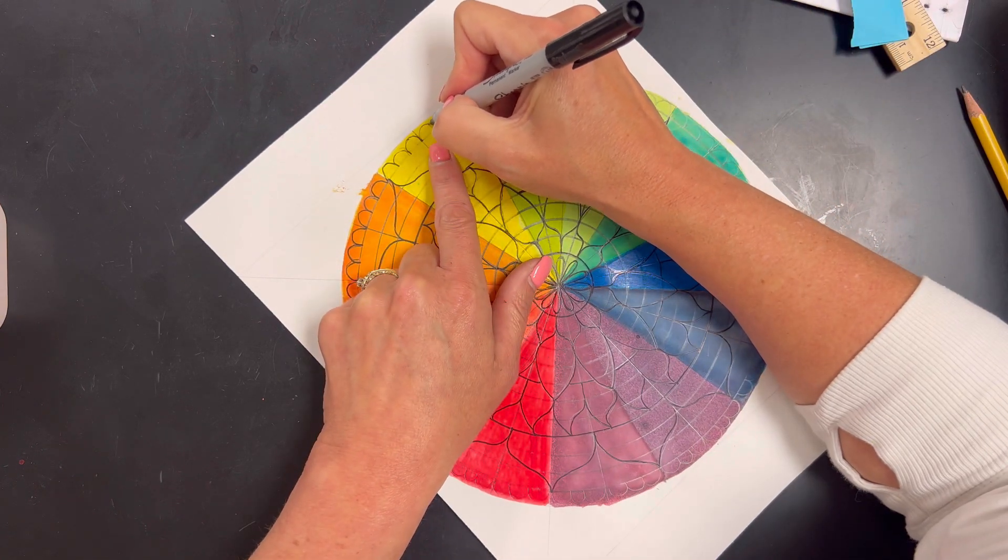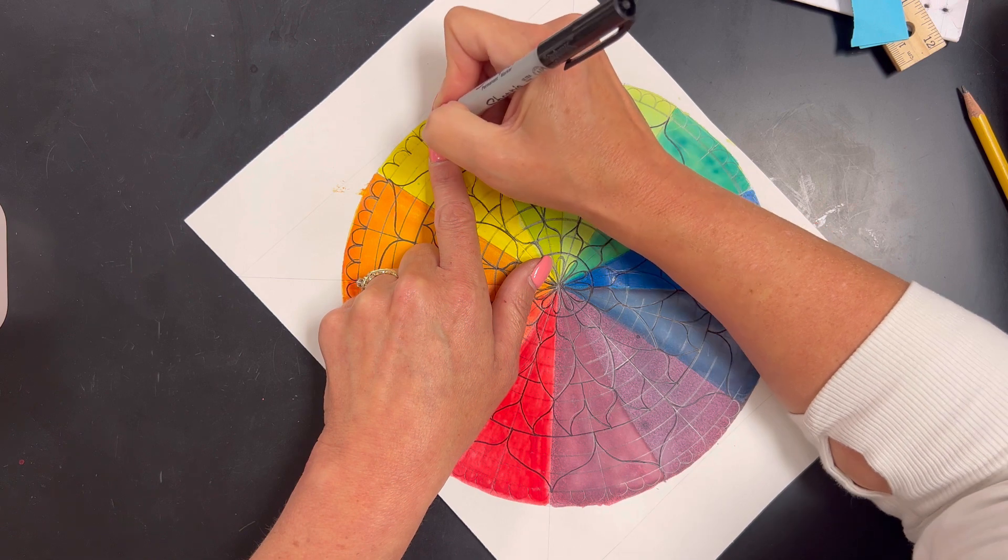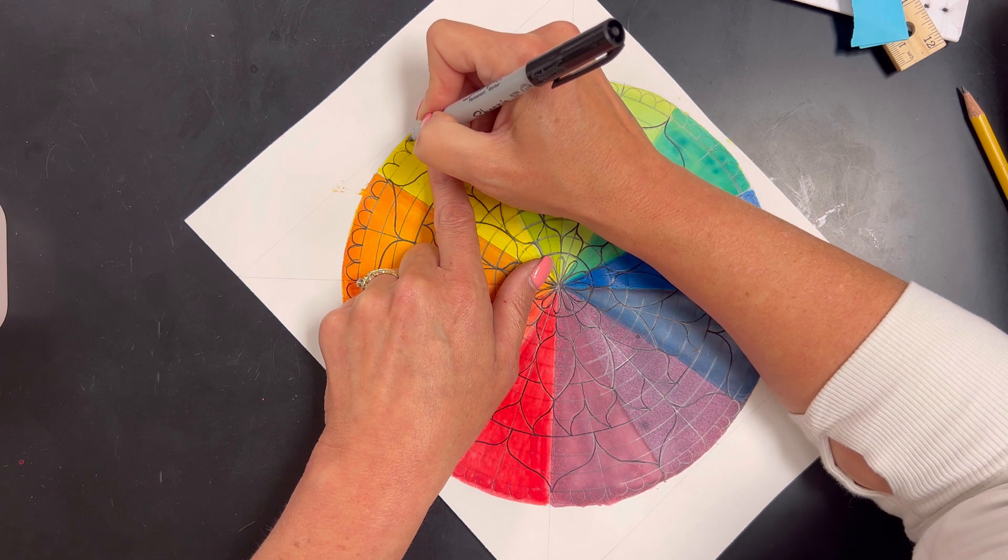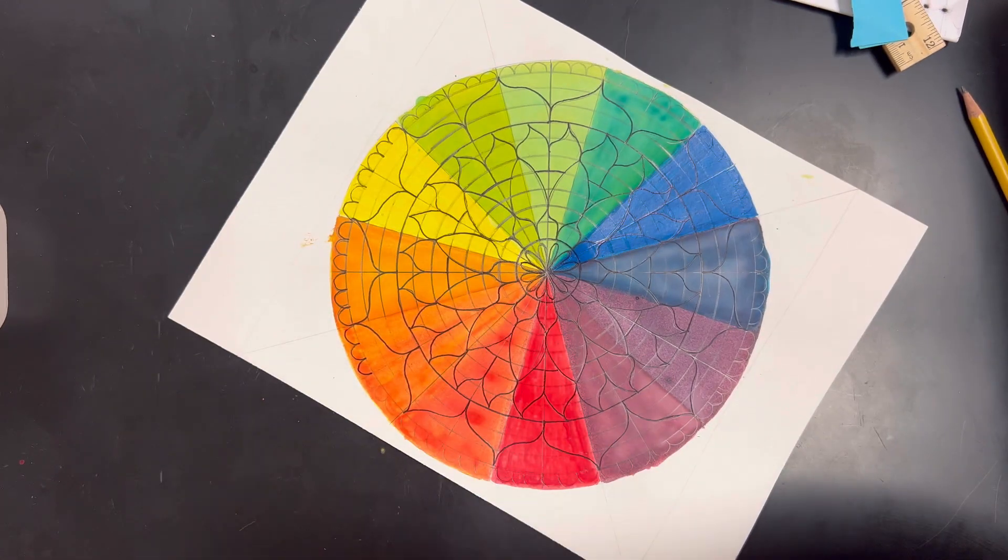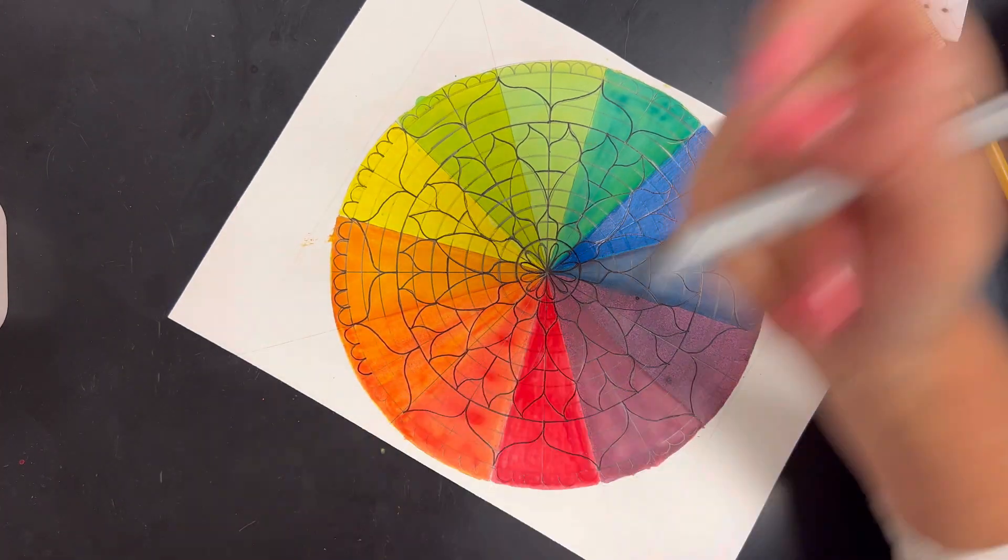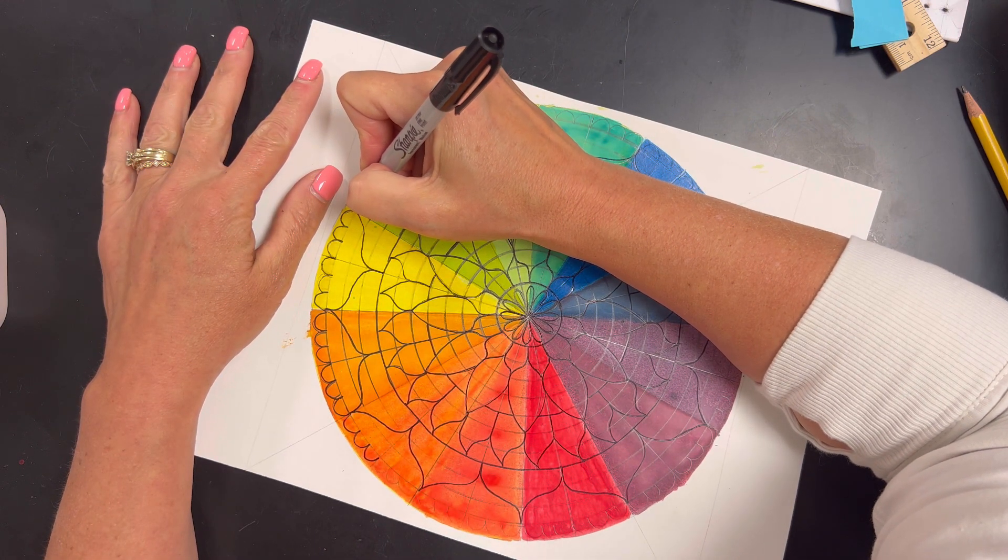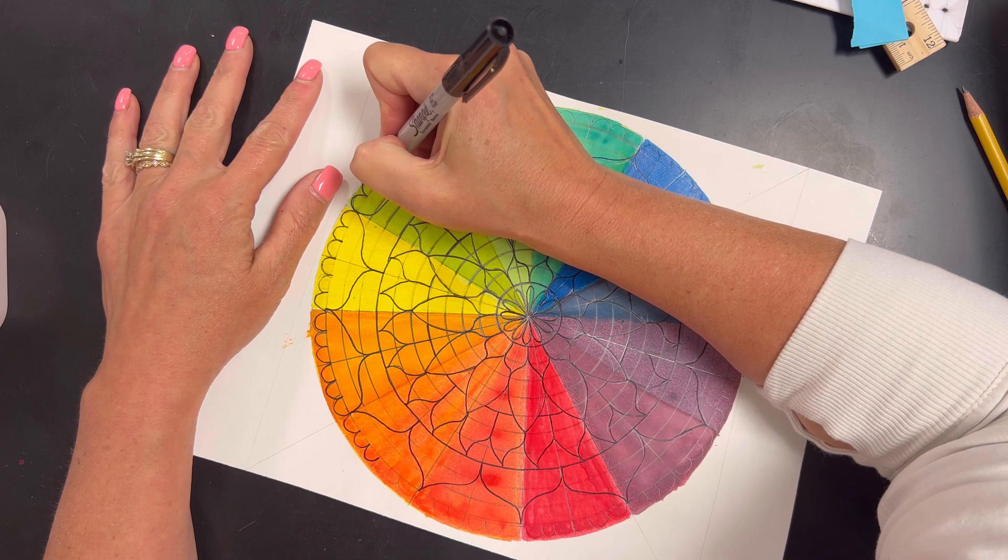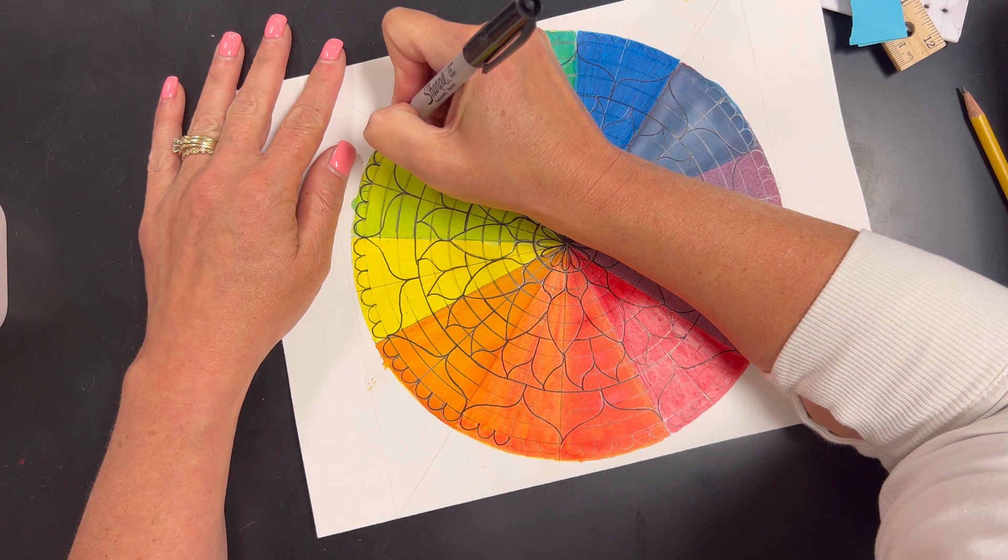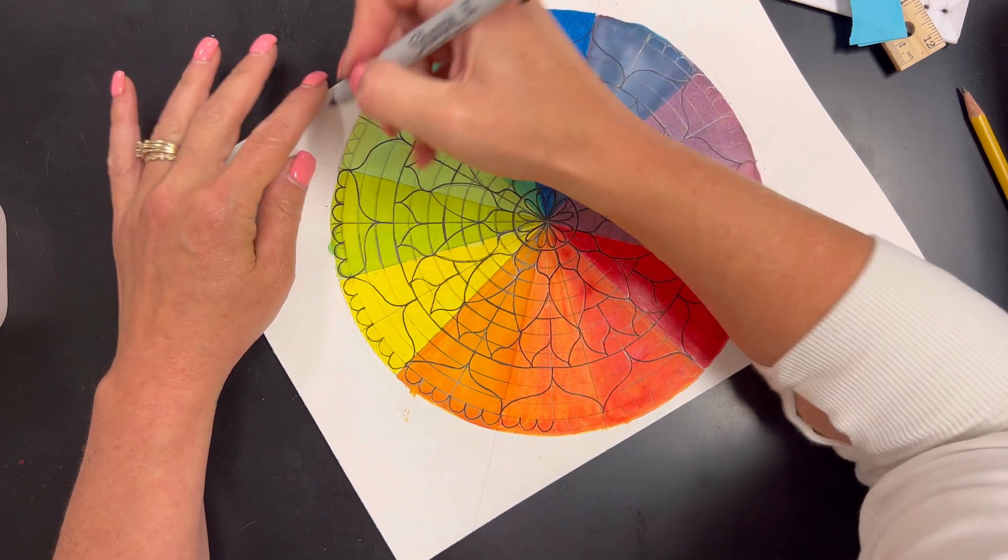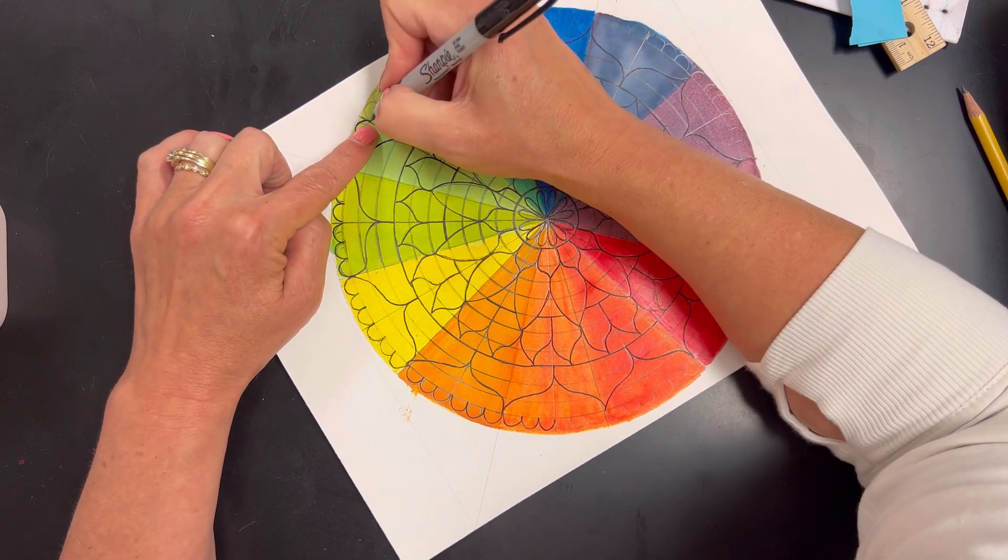Yellow is giving me fits. I hope I don't have continuous Sharpie problems. And again, I'd like my, when I get to the ends, I'd like them to meet at the transition lines, you know?